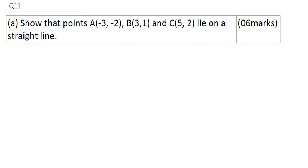This question says, show that point A, that's minus 3, 2, B, 3, 1, and C, 5, 2 lie on a straight line.